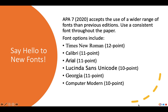APA 7 accepts a wider range of fonts than previous editions — make sure to use a consistent font throughout your paper. Font options include the previously accepted Times New Roman 12pt, and now also Calibri 11pt, Arial 11pt, Lucida Sans Unicode 10pt, Georgia 11pt, and Computer Modern 10pt. You can use a smaller font size in tables and figures if needed, but within the text of your paper use a consistent font size that matches your font.